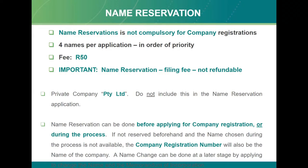Name reservation can be done before applying for company registration, or you can apply at the same time for both the name reservation and the company registration. If the name is not reserved at the same time, the enterprise number will be your company name and a name change can be done later.